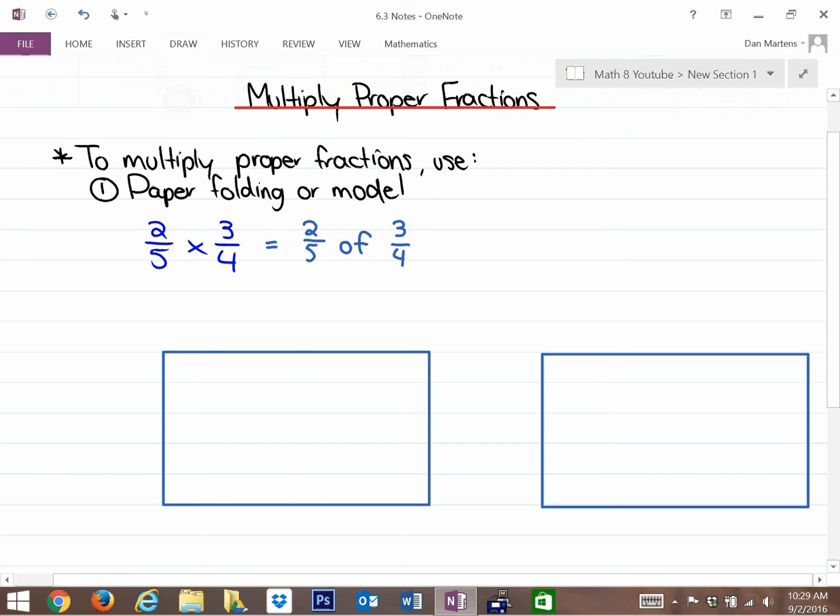So the first thing I'm going to do is divide this into three-quarters. If we want to know what two-fifths of three-quarters is, we better, first of all, represent three-quarters. I'm going to do the paper folding method first. So I'm going to shade in. You'll notice here that I'm using particular colors.